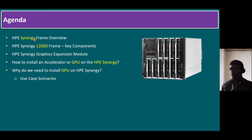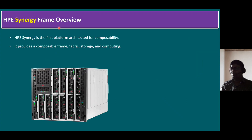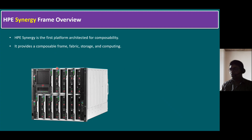Let's start with the first point: HPE Synergy frame overview. The Synergy is the first platform architecture for composability. Composability means, if you plan for any solution — like a private cloud, on-premise solution, or any data center scenario — we need a server. That server can be a rack mount server, blade server, or tower server. Synergy is one of the better blade servers. It's not only a blade; we can also include storage nodes.